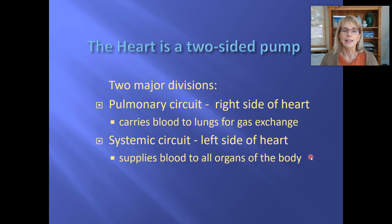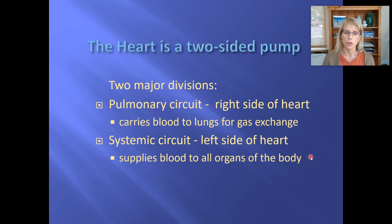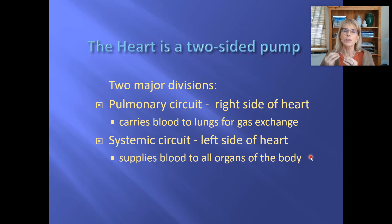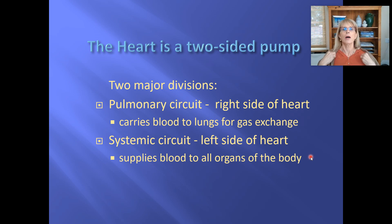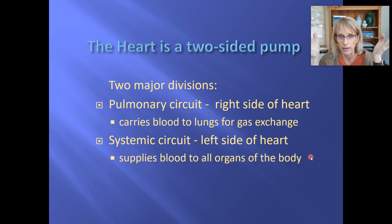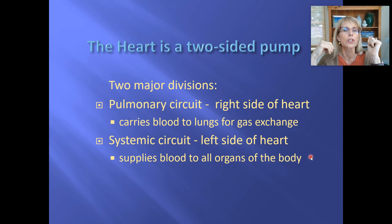Let's look at it the way it is technically in our textbooks. The heart is a two-sided pump with two major divisions. One is called the pulmonary circuit, also known as the pulmonary circulation. The other is the systemic circuit, also known as the systemic circulation. The pulmonary circulation starts at the right side of the heart, takes the blood to the lungs, and then back from the lungs to the left side of the heart. Pulmonary circulation doesn't have very much blood in it — a surprisingly small amount at any given moment.